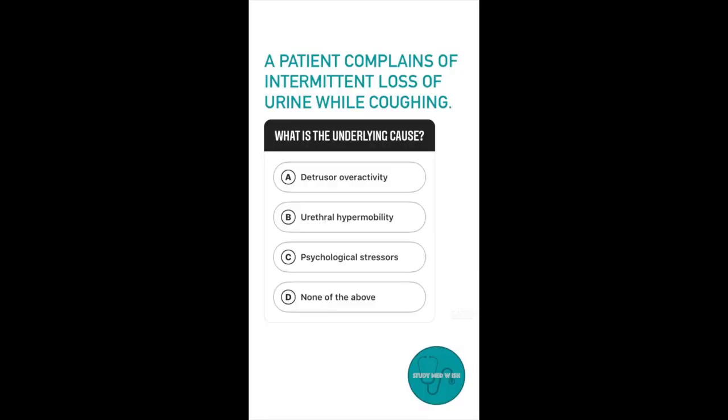Question number five: A patient complains of leakage of urine whenever she coughs. What is the underlying cause? Option A, detrusor overactivity. Option B, urethral hypermobility. Option C, psychological stressors. Option D, none of the above. The answer to this question is urethral hypermobility.